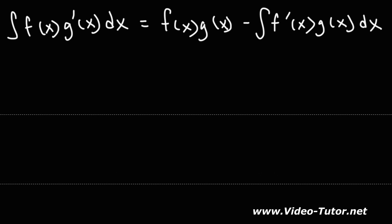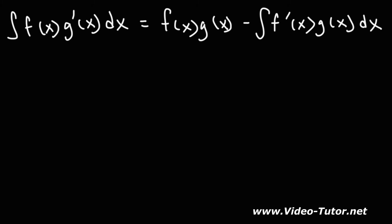Now we're going to start introducing the u and v variables. Let's say that u equals f of x. If that's the case, then v will equal g of x. Differentiating both sides, u becomes du and the derivative of f of x becomes f prime of x dx. The derivative of v becomes dv and the derivative of g of x is g prime of x dx.